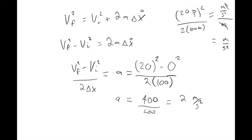If you wanted to be more careful with units, you could write 20 meters per second squared divided by 2 times 100 meters — the meters cancel and you get meters per second squared. As long as you solve for the variable correctly and plug in the values where they're supposed to go, all of your units will work out. When we start doing two-dimensional kinematics, it's going to be really important to know whether a velocity is in the x or y direction, and how to use things from both directions to solve a problem — we'll talk about that next week.